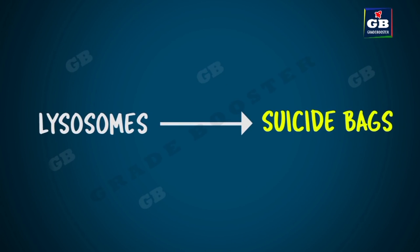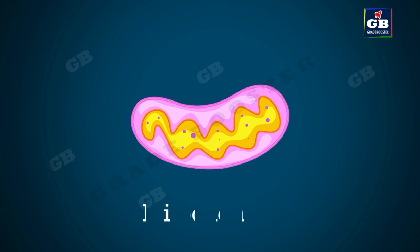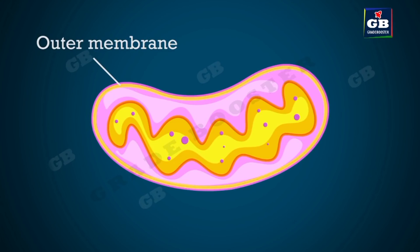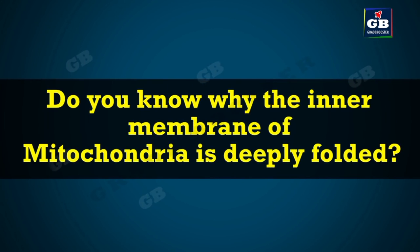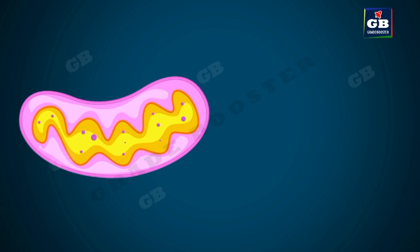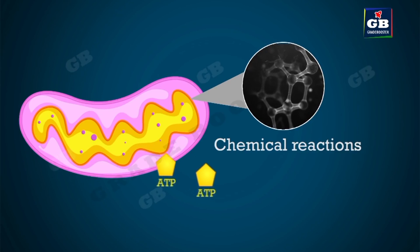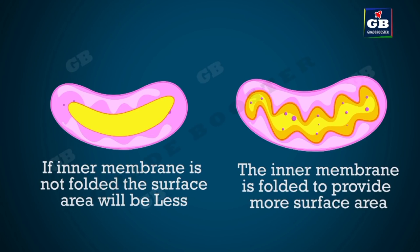Mitochondria are double-membraned organelles with one outer membrane and one inner membrane. The outer membrane is porous, while the inner membrane is deeply folded. The inner membrane is deeply folded to provide more surface area for special reactions in which a special energy molecule called ATP is produced.